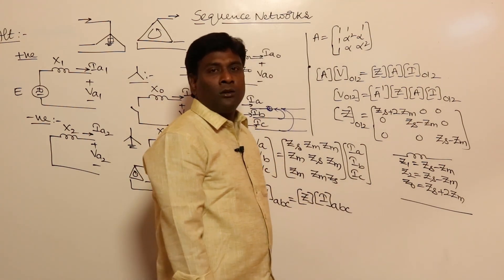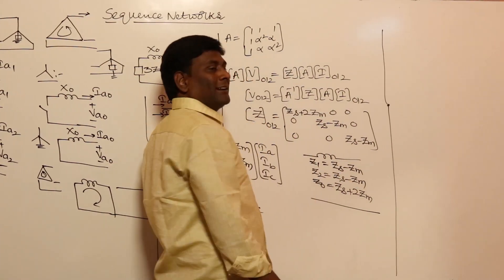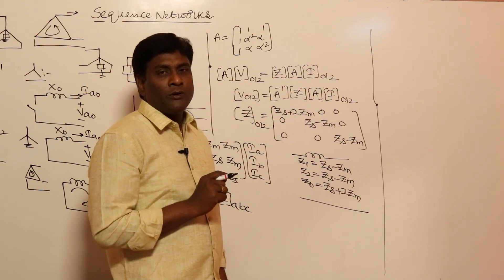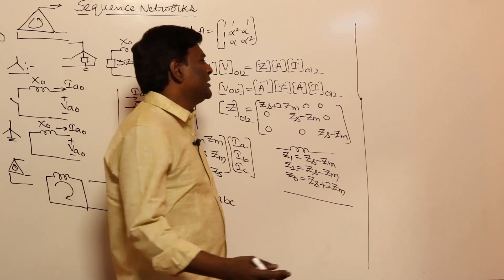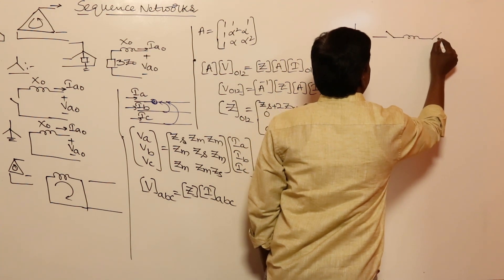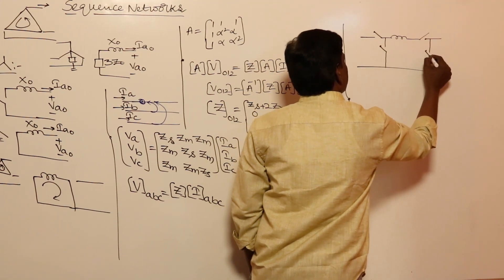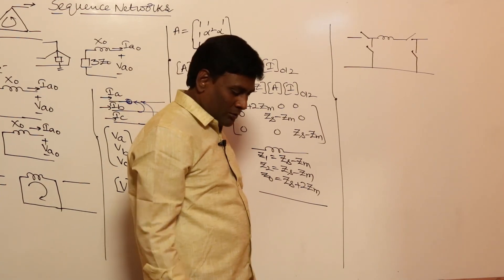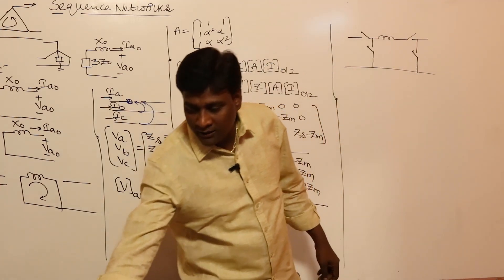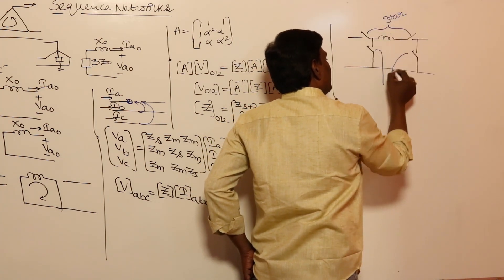Now let us think of transformers. I will draw the sequence networks directly using switches, and you will understand automatically. The series switches are meant for star connections, and the other switches are meant for delta connections — previously we analyzed zero sequence currents and triplen harmonic currents in transformers, so this should be easy.